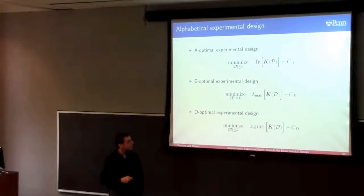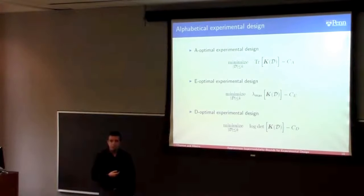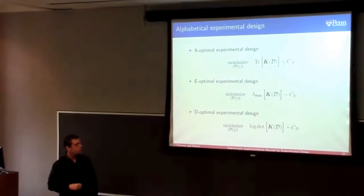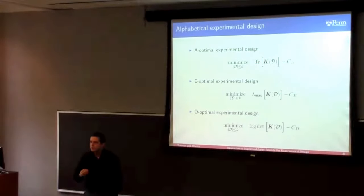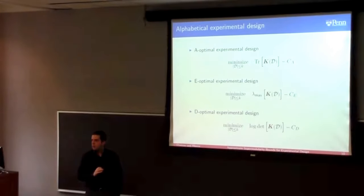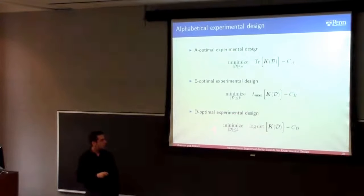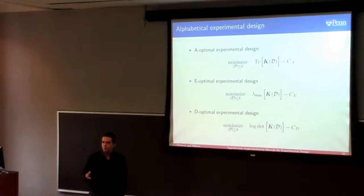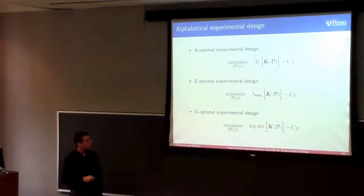These problems are cardinality-constrained discrete optimization problems, which are mathematically hard. For example, the first problem (A-optimal) is NP-hard in general — you can map set cover into it. The third problem (D-optimal) is a submodular minimization problem, so it's NP-hard to approximate better than 1 minus 1/e. These are actually very hard problems.